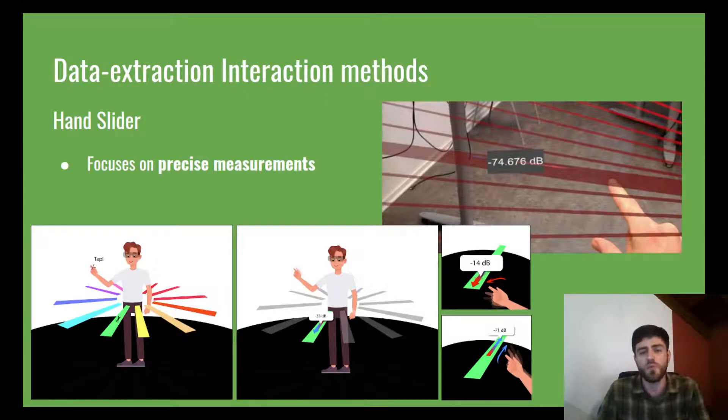After picking one of the 2D vectors, the user can slide their hand sideways to expose the intensity reading from different points along the vector.